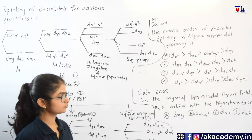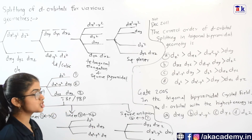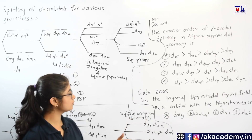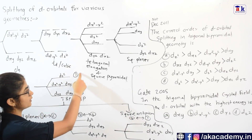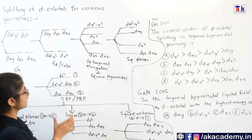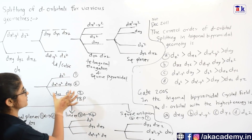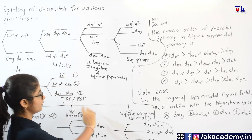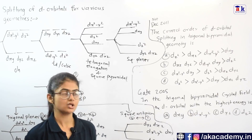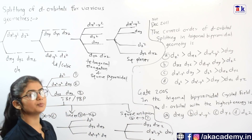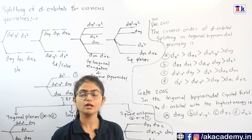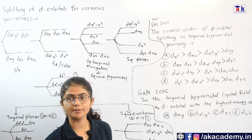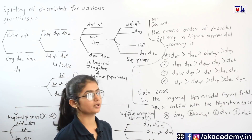For square antiprism geometry, interchange positions three and one from the TBP diagram. DYZ and DXZ will go up, DZ square will come down, and the in-between level remains constant. This is how the splitting of d orbitals should be remembered for all the various geometries.